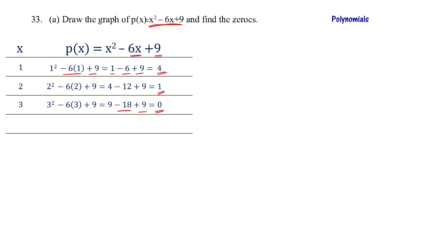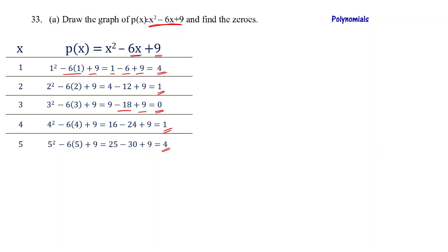Taking x = 4: p(4) = 4² - 6×4 + 9 = 16 - 24 + 9 = that is equal to 1. Since we already have zero, we can proceed to plot these points on the graph.